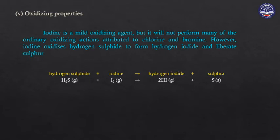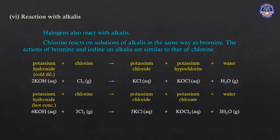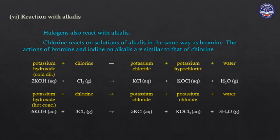Reaction with alkali: halogens react with alkali. Chlorine, bromine, and iodine react with potassium hydroxide. With cold dilute potassium hydroxide, chlorine produces potassium hypochlorite. With hot concentrated potassium hydroxide, chlorine produces potassium chlorate.